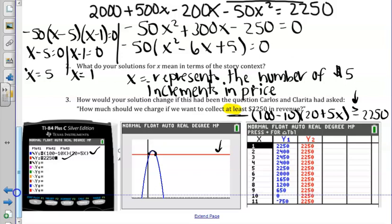If we go to our table, we can see that when x is 1, y is $2,250. So if x is 1, then that checks.